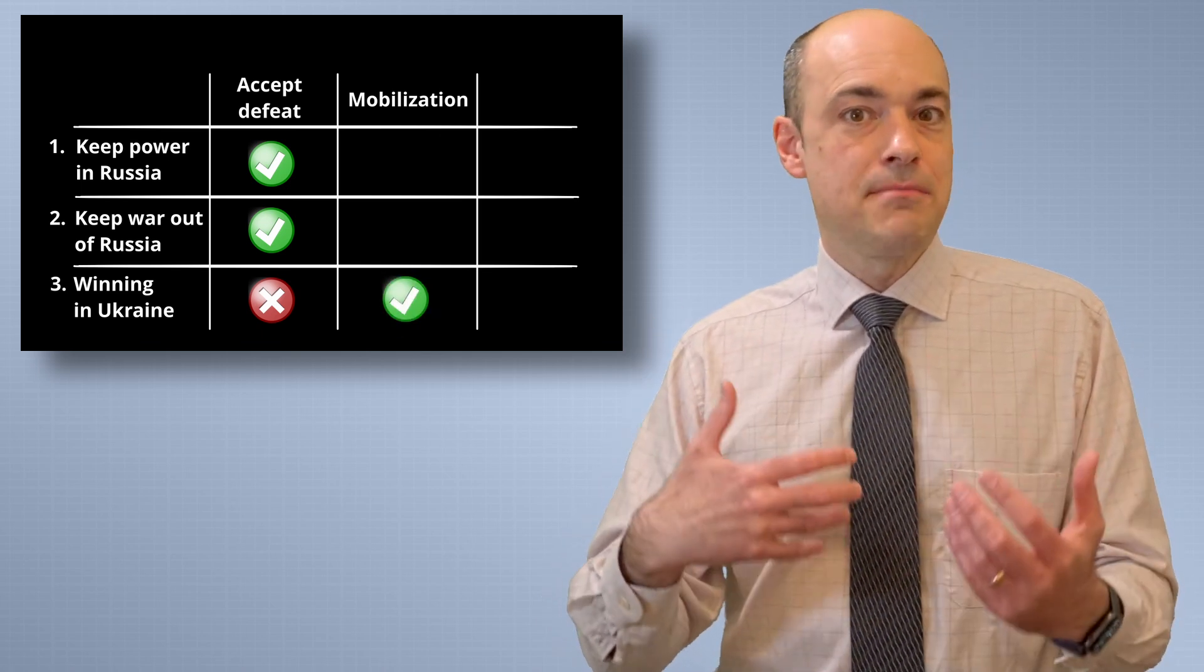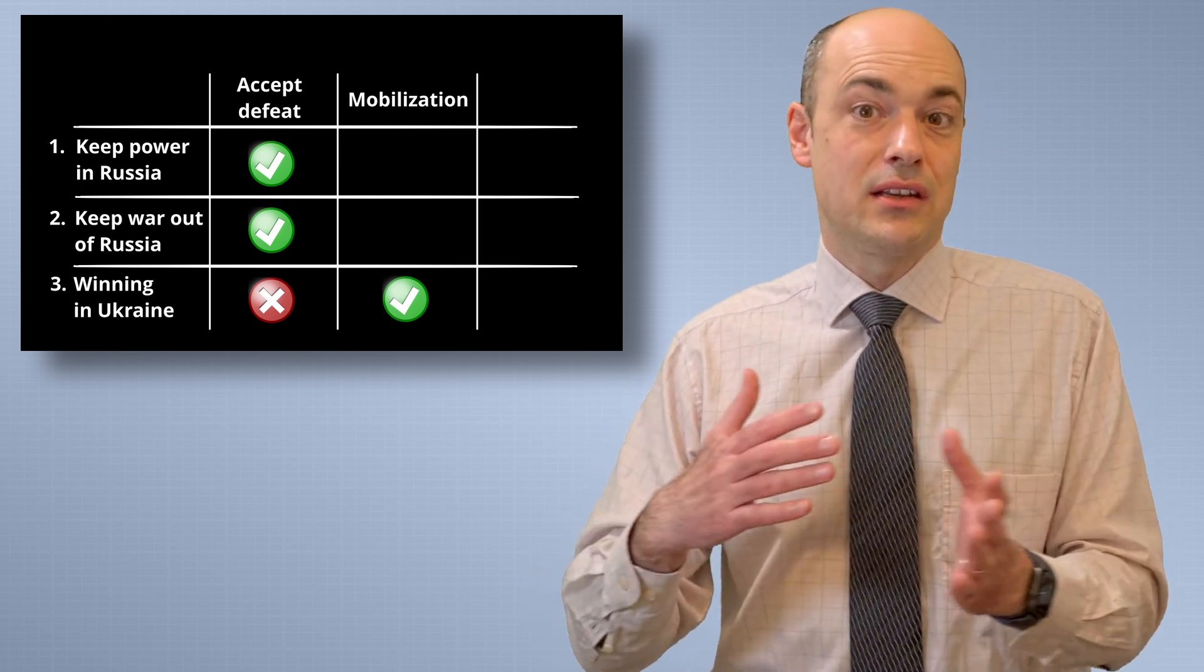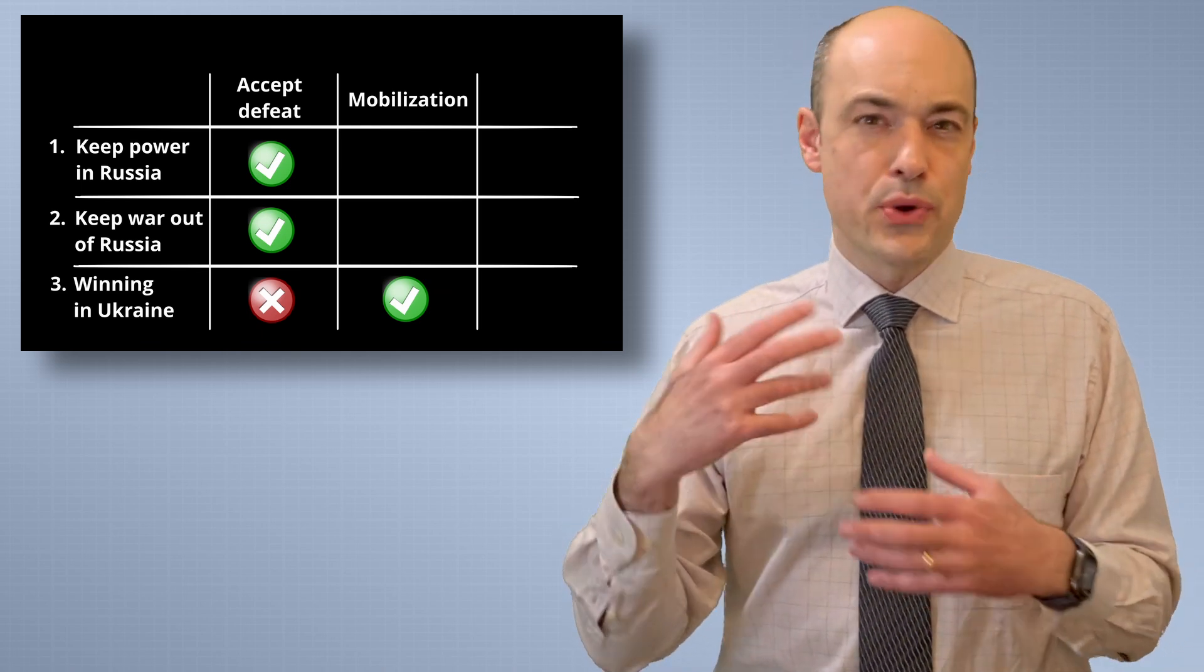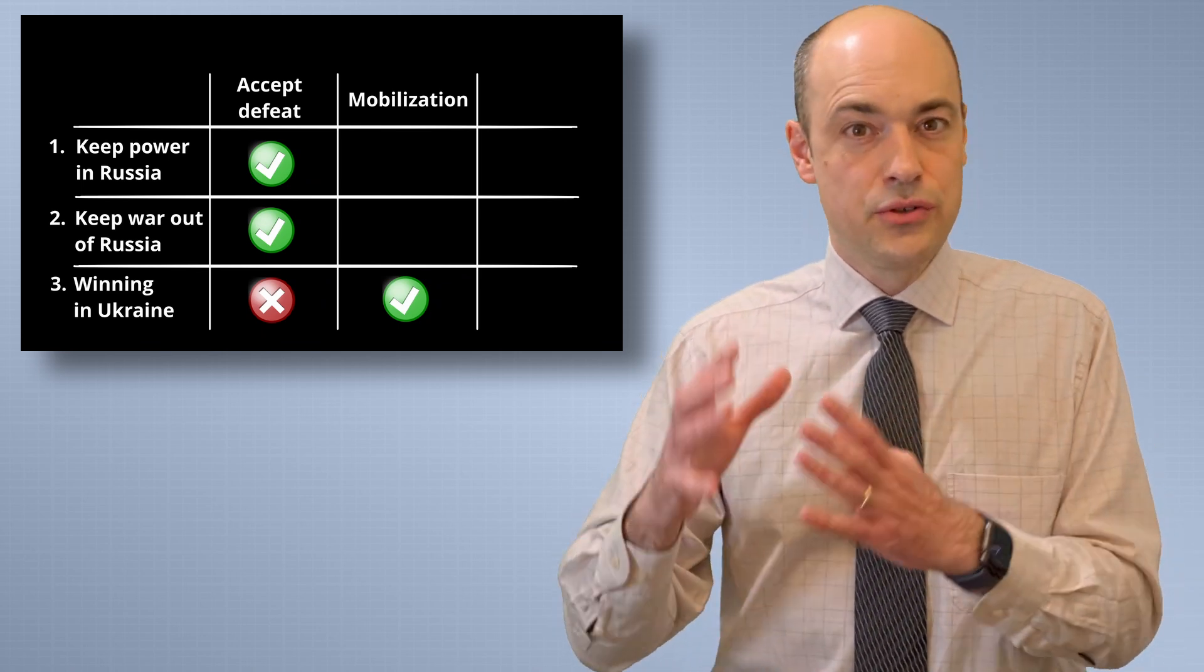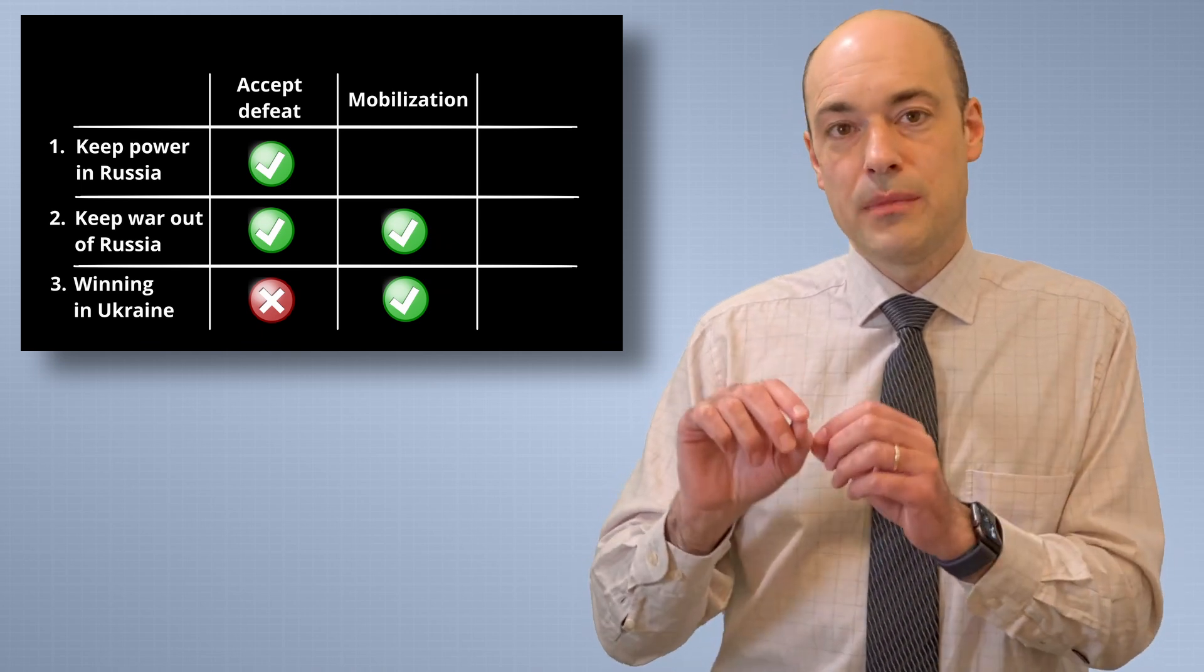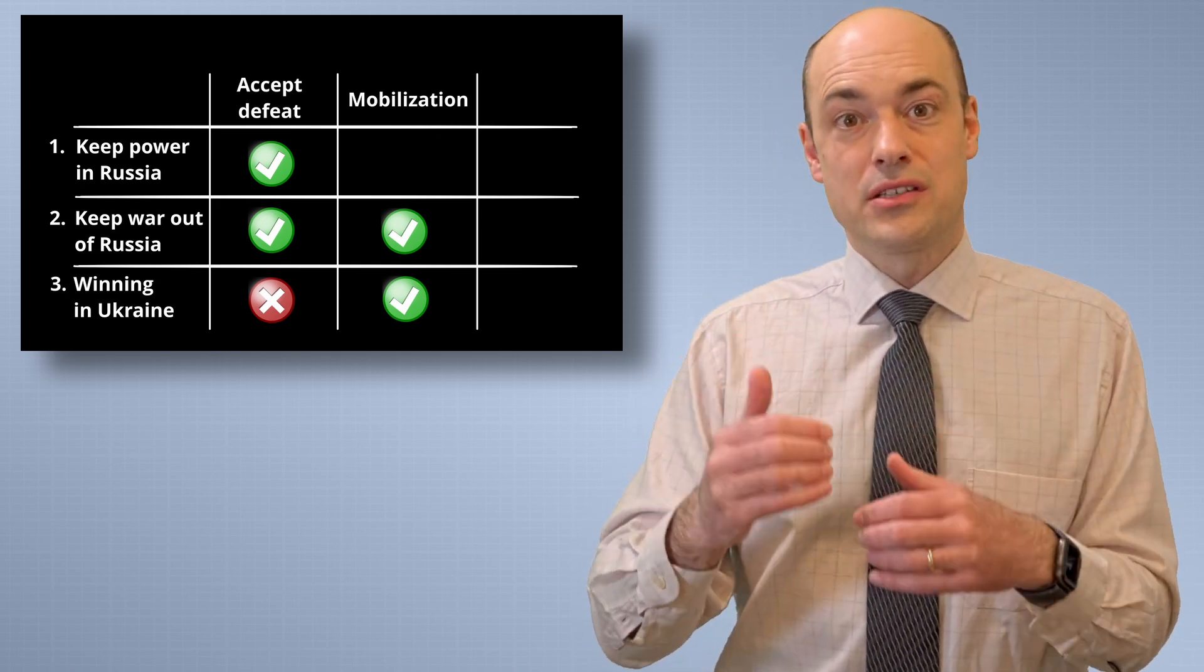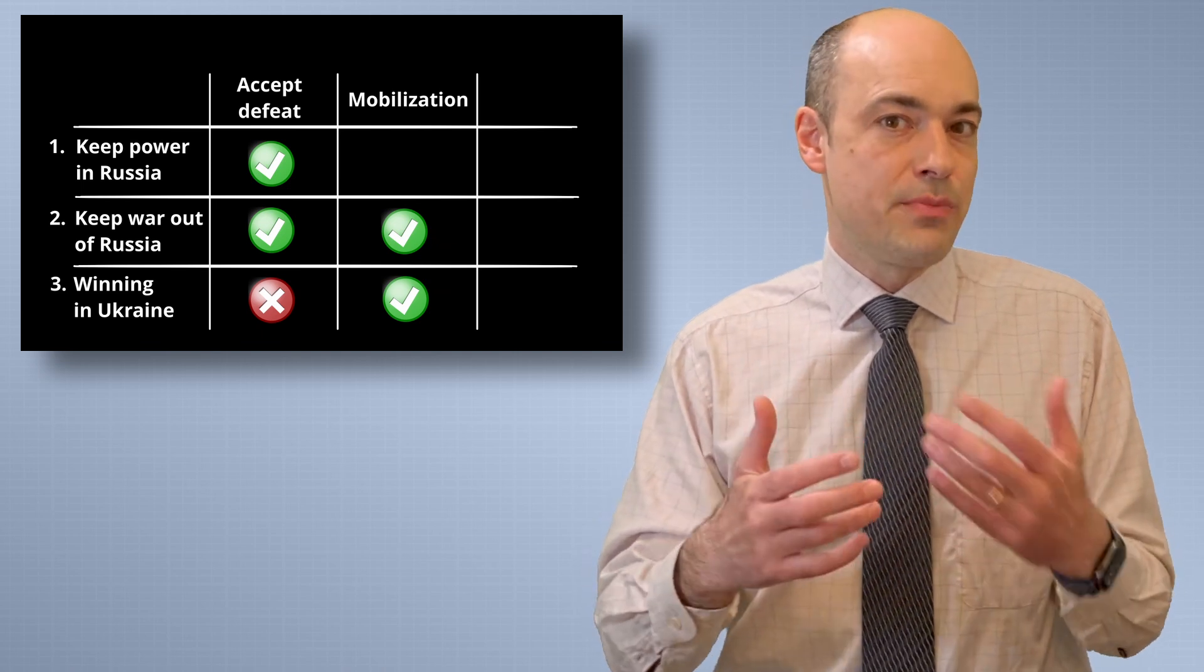And it seems that many people in the West assume that Putin will do this because they think it is impossible that Putin can acknowledge a defeat. But if we look at the other priorities, I think it gets more complicated. It's probably not going to lead to a war on Russian territories, so we can check off priority two. But the first priority is a problem. If Putin chooses to commit conscripts to the war in Ukraine or initiates mass mobilization, then there will be significant negative consequences in the Russian society. And he's essentially jeopardizing his own power base.